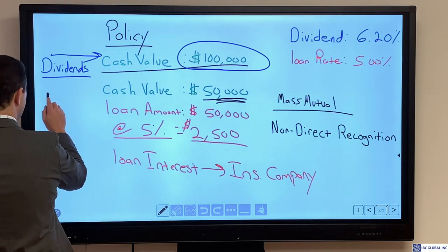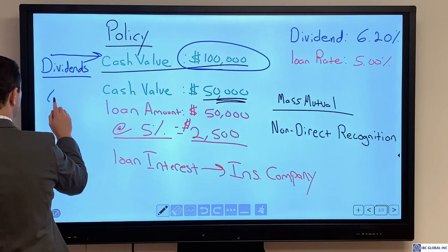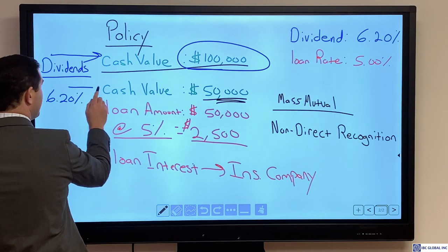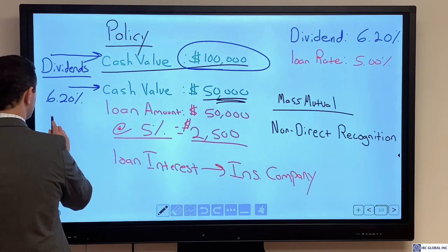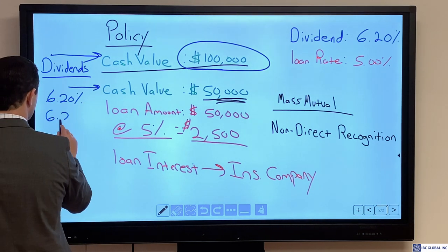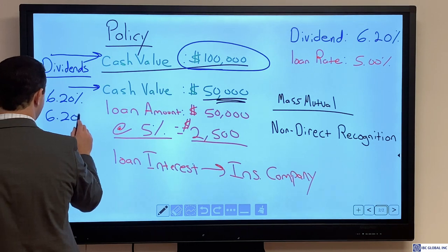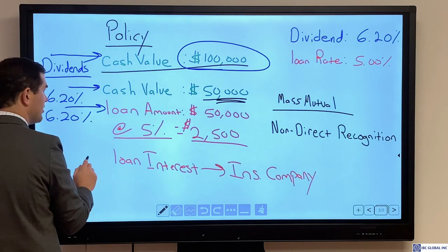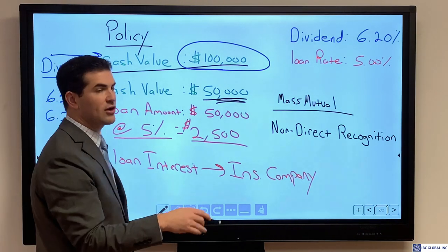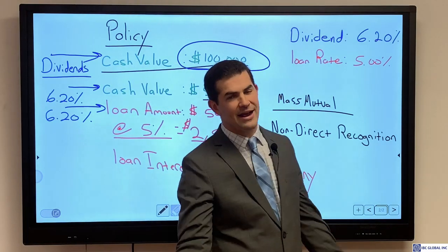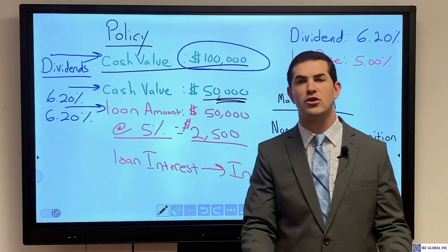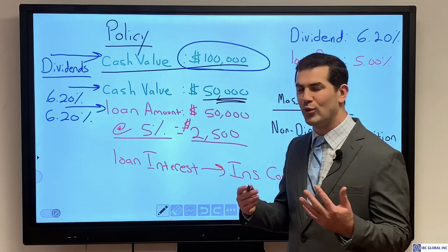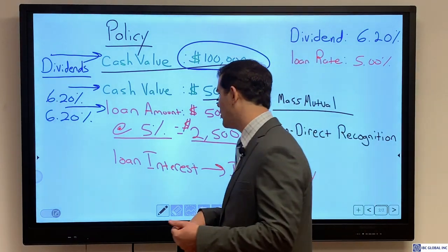That dividend rate of 6.2% will be applied to any money in cash and also to any money outstanding in loans. A non-direct recognition policy does not recognize the fact that I have a loan outstanding. The money keeps on churning, doing exactly what I want it to do.